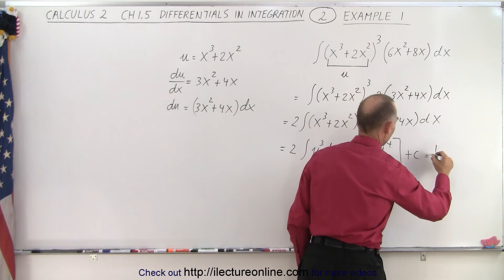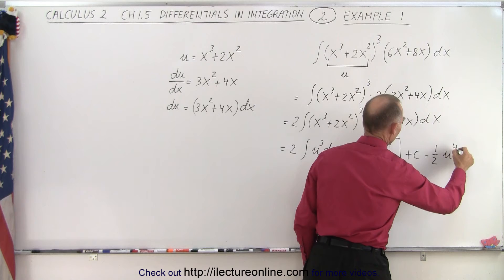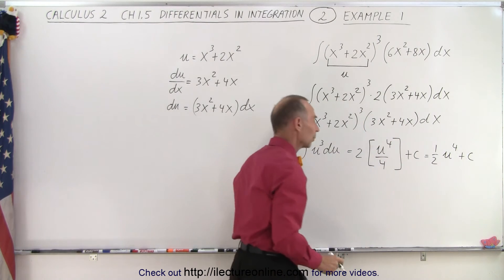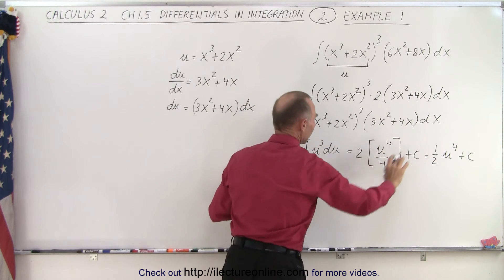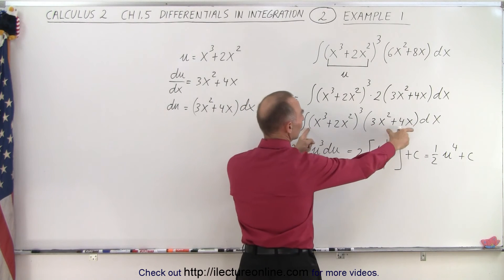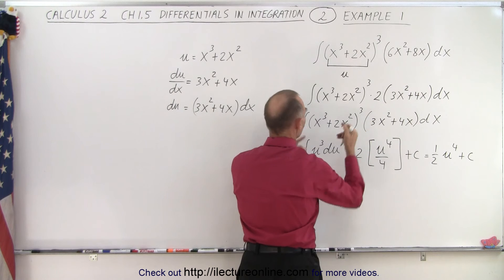2 and 4, well that becomes 1/2 u⁴ plus a constant of integration. Well essentially I can do the same thing here without going to this step right here. I can simply say I'm integrating this. This is my du. This is my u³.